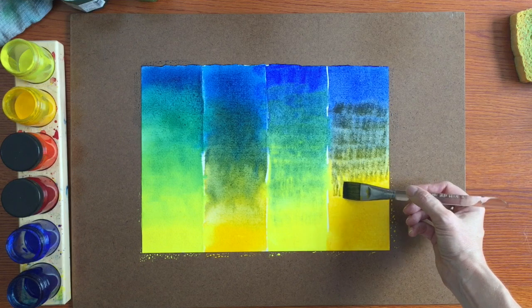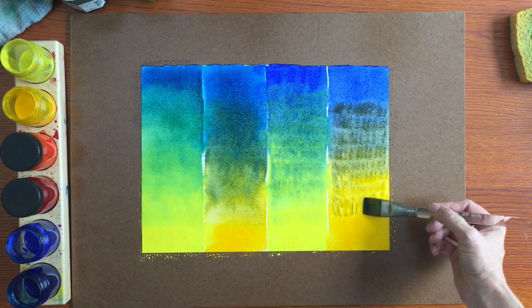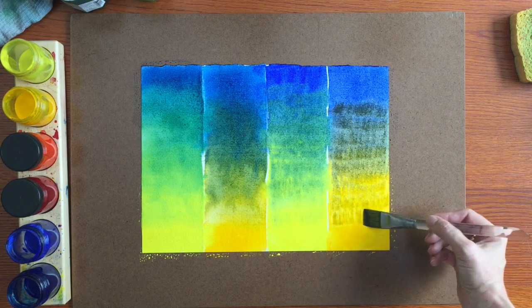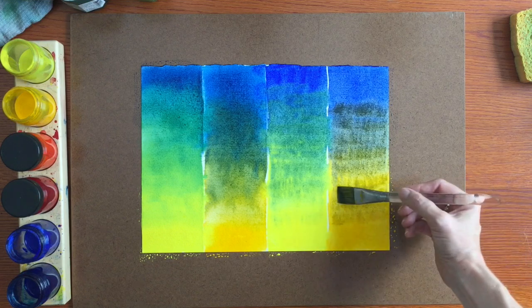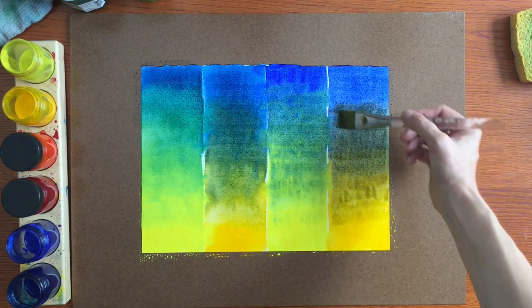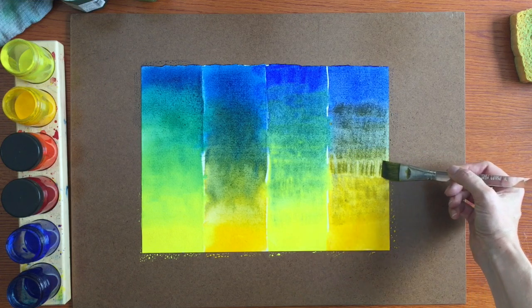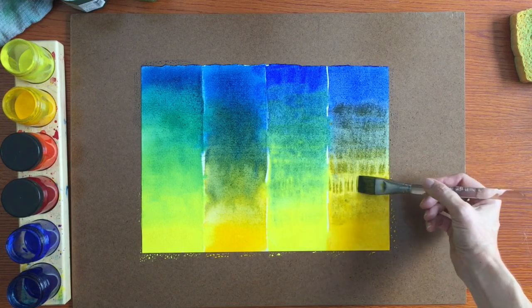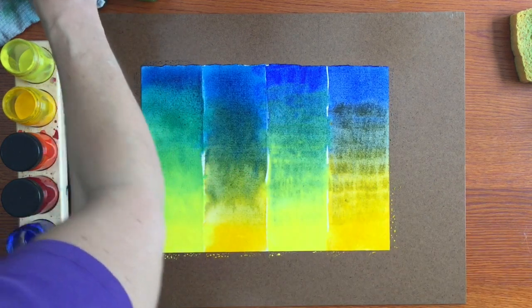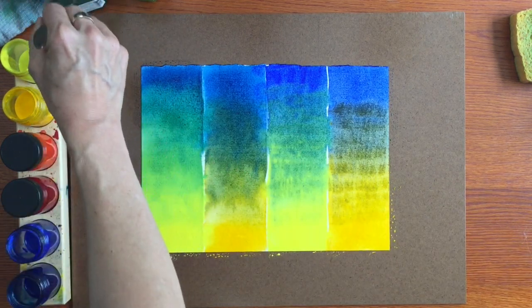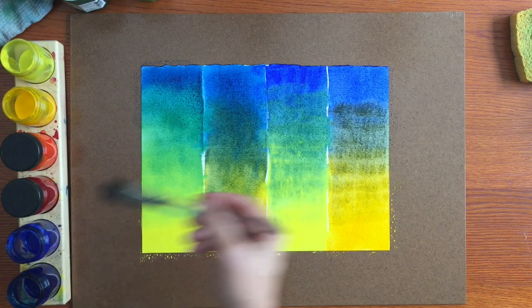As you can see, the yellow just doesn't have the vibrancy that the green needs to have a true green. I mean these are really also green, but they're not the kind of greens that you would be using on a regular basis. They would be more for shadows and undertones.